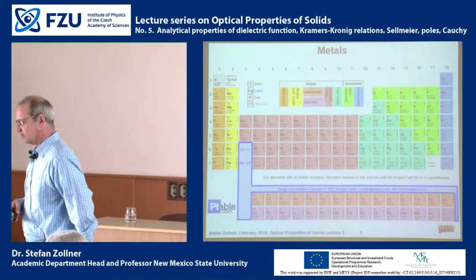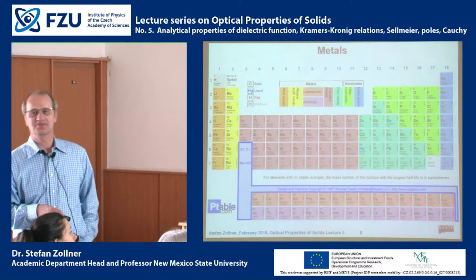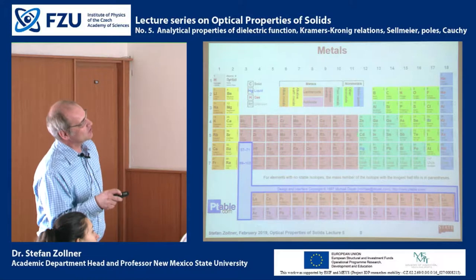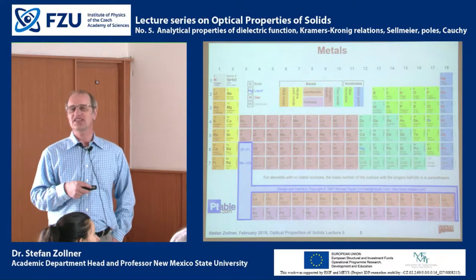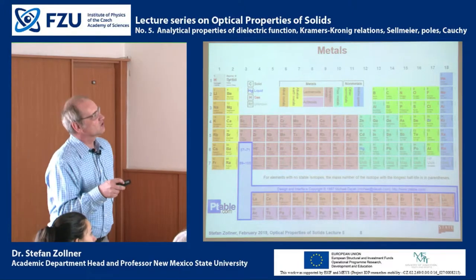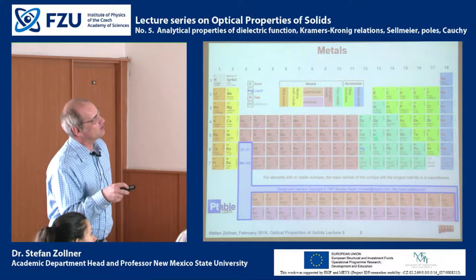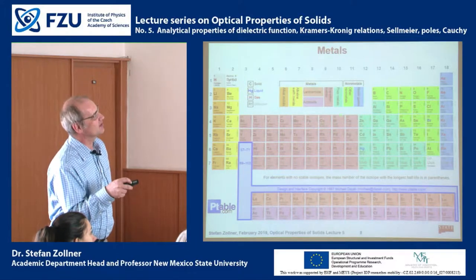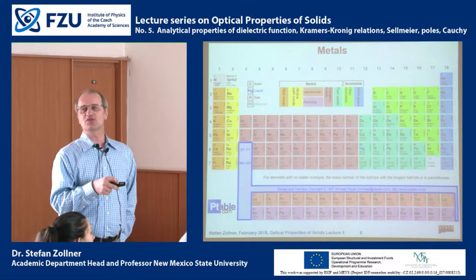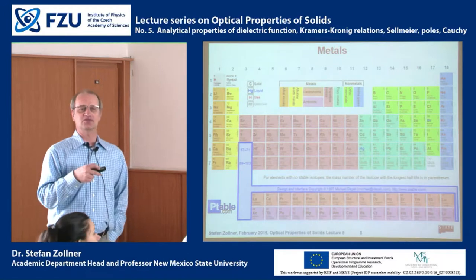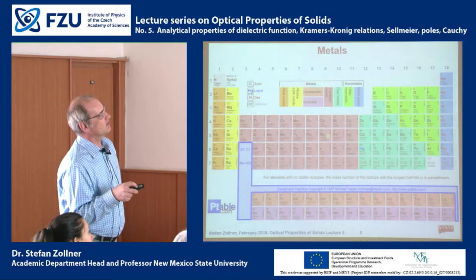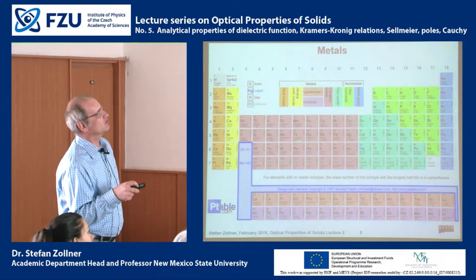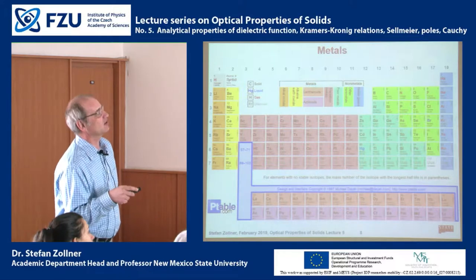Copper, silver, and gold are called the noble metals. As a physicist, I would say the noble metals are noble because they have a completely full D-shell. Nickel is my favorite metal and is a near-noble metal because the D-shell is almost but not quite full, so there is an important difference in the optical constants between nickel and copper. In other transition elements, the D-shells are not full.